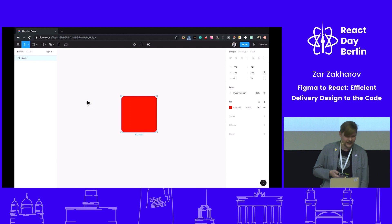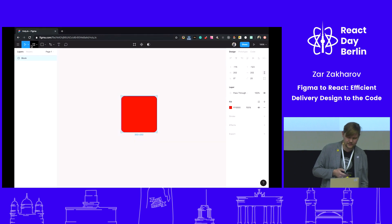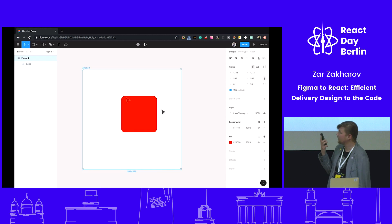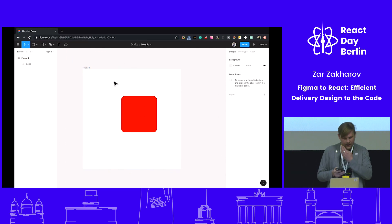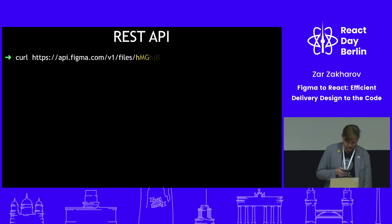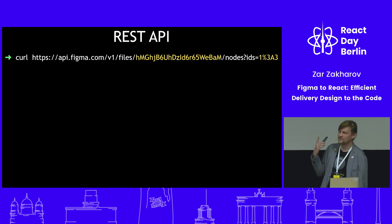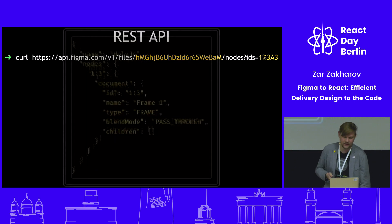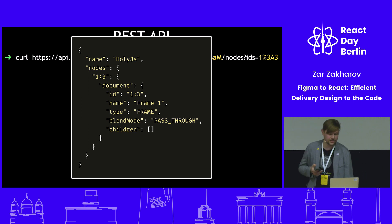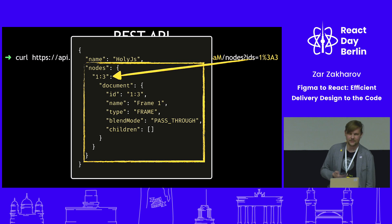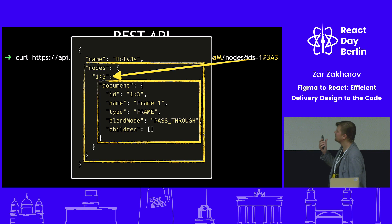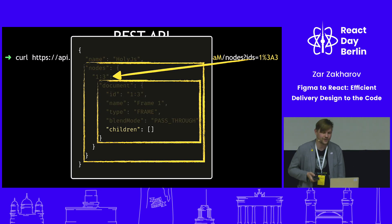Most often, all elements in a dashboard are combined by a group or frame, and these parent elements have a public ID which you can see in the URL in your browser. We can construct a new URL with the file key and node IDs, and when we get the new JSON response, you see it returns nodes — not document — because we're requesting only one specific point. Then we see IDs and documents like we saw earlier, and the document has children which contain our rectangle.